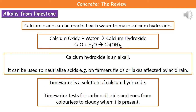Once we've generated calcium oxide by heating our limestone or marble, we can react the calcium oxide with water to make calcium hydroxide. I've given you the word and symbol equations there — calcium oxide plus water makes calcium hydroxide.